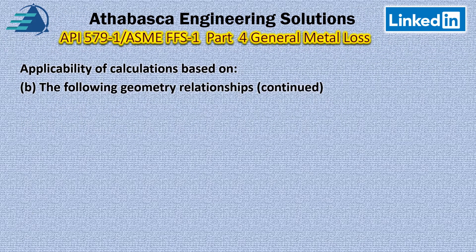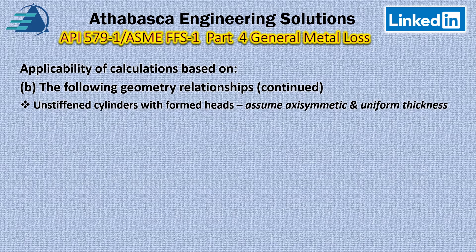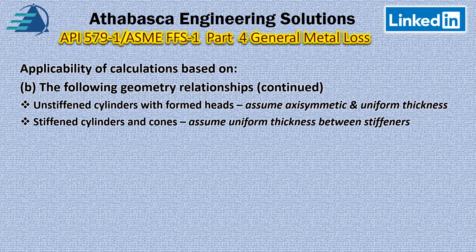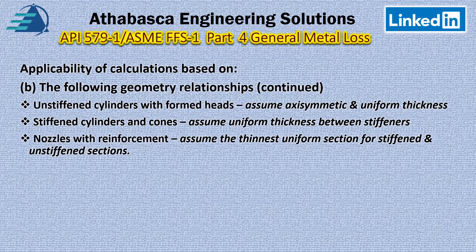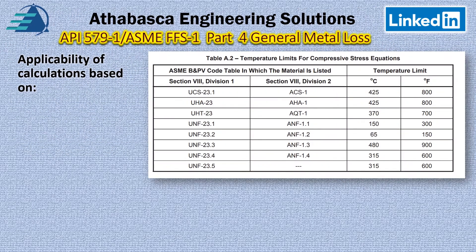For unstiffened cylinders with uniform heads, we can assume axisymmetric and uniform stress just by looking at the shape. We can also look at the stiffening of cylinders and cones, assuming a uniform thickness between the stiffeners. There's also an assumption about nozzles with reinforcement, assuming that the thinnest uniform section forms the stiffening. We also have to consider the phenomenon of creep, with limitations shown in table A2.